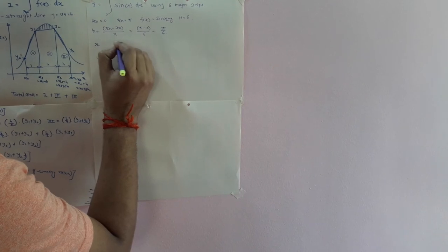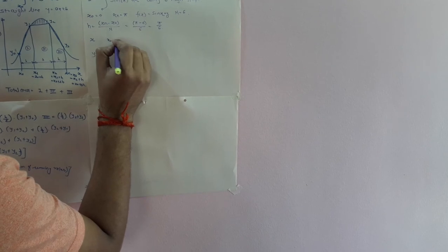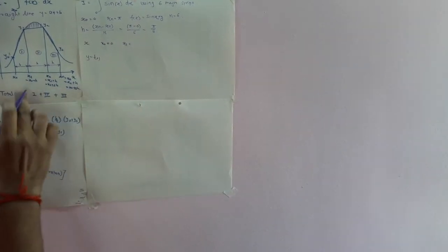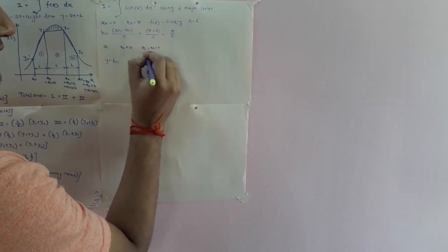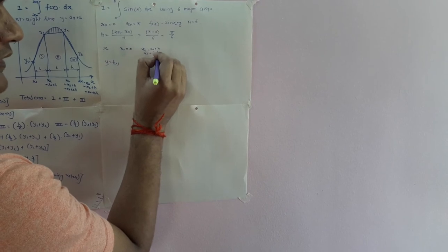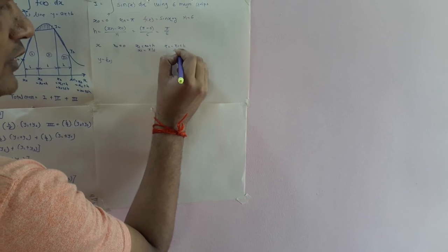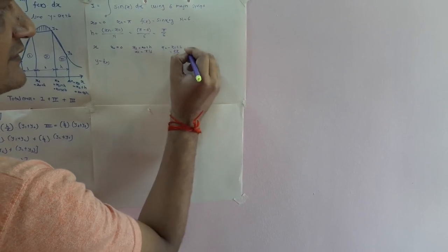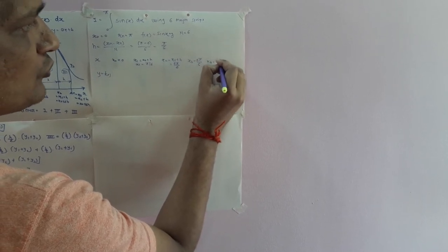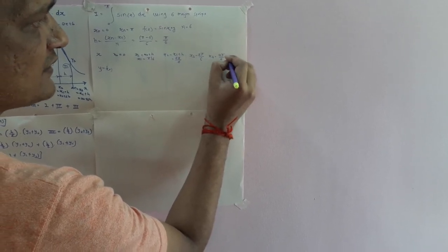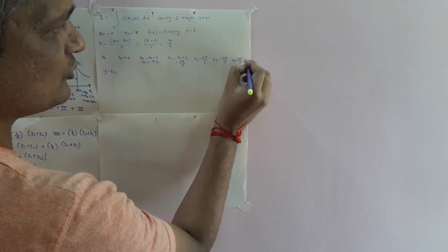The x-values are: x0 = 0, x1 = π/6, x2 = 2π/6, x3 = 3π/6, x4 = 4π/6, x5 = 5π/6, and x6 = π = 6π/6.